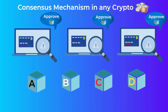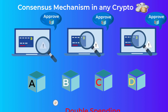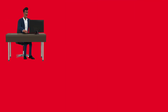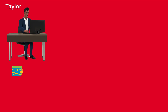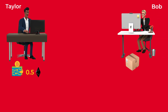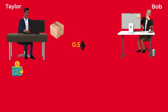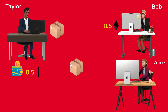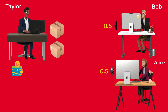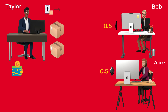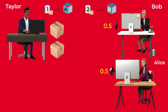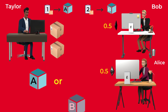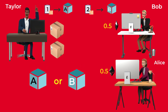To be able to understand the proof of stake, you must first understand the double-spending problem. For example, suppose that Taylor has only 0.5 Ether in his wallet. He buys a product from Bob and sends him the 0.5 Ether, and before the transaction gets confirmed, he buys another product from Alice and sends her the same 0.5 Ether seconds after the first transaction. Let's say transaction 1 was entered into block A and transaction 2 was entered into block B. How can the network decide which transaction to approve and which to reject?